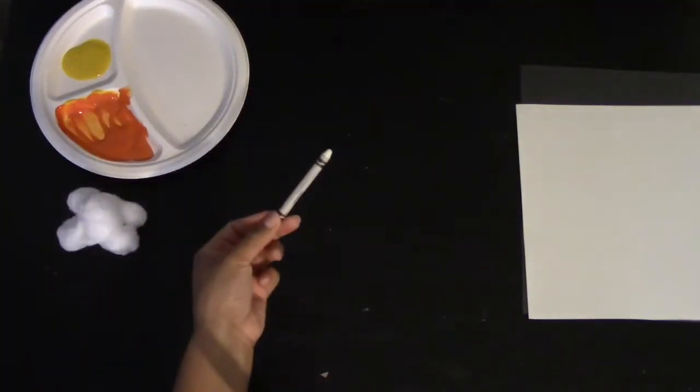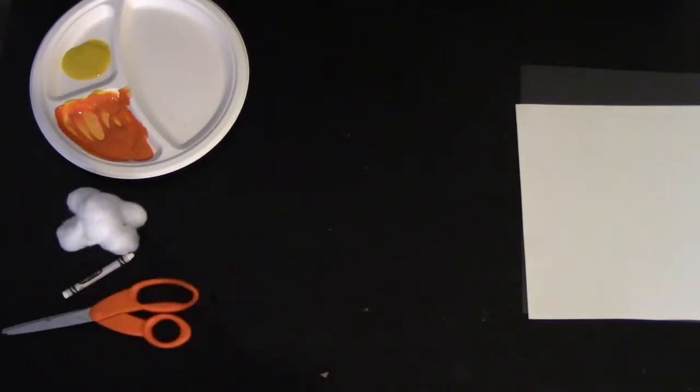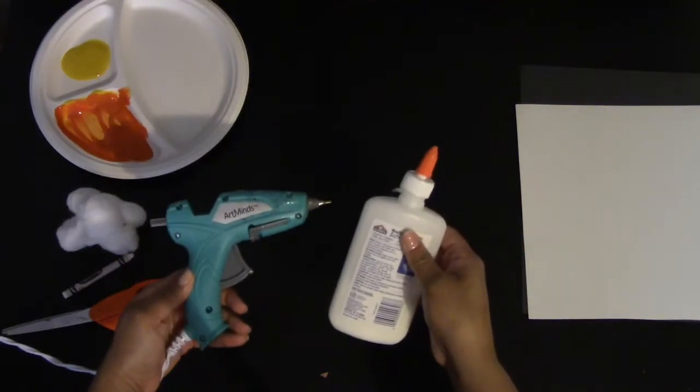What you're going to need for this project is a sheet of white and black paper, yellow and orange paint, a few cotton balls, you're going to need a white crayon, scissors that you will use with a parent, as well as glue in any form.